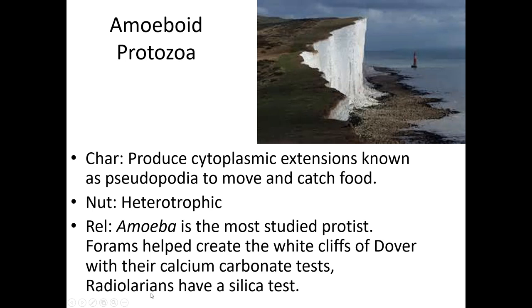Radiolarians are kind of similar to diatoms — they have that silica or glass shell, but they stick pseudopodia out and then bring it back into the shell to eat. So where diatoms were photosynthetic, radiolarians are eaters, and that's why they belong in the amoeboid protozoan group.